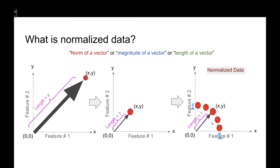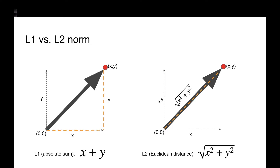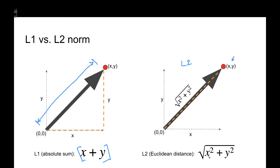In scikit-learn we have L1 and L2 norms. For L1, when calculating the length of the vector, we add the x and y coordinates of that data point. For L2, we calculate the Euclidean distance — we take the x squared plus y squared and then take the square root of that sum. That is the key difference between the L1 versus L2 norm.